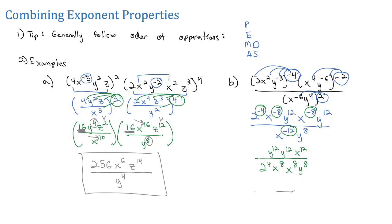Now let's combine and simplify into our final answer. For the y's, we add the exponents 12 plus 12 to get 24, then subtract the 8 on the bottom — 24 minus 8 is 16 — giving y to the 16th on top. For the x's, 8 plus 8 on the bottom gives 16; 12 minus 16 is x to the negative 4, which moves to the bottom as x to the 4th. And 2 to the 4th is 16. So the final answer is y to the 16th over 16x to the 4th.